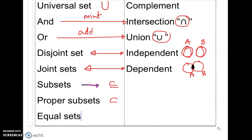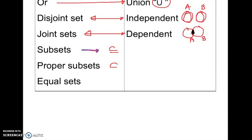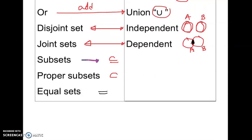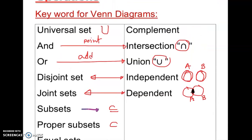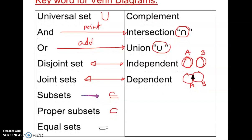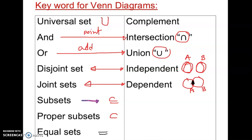For equal sets, set A is equal to set B when each element of set A is in set B and they are exactly the same. That is the condition for equal sets. Also, I missed one important term — complement. Complement of A is basically 'not A,' written as A-prime or A-naught. The complement of A means everything that is not in A. So we can look at all of these concepts as we continue.